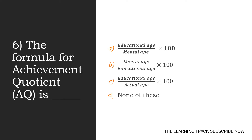The formula for achievement quotient is dash. The options are: educational age by mental age into 100, mental age by educational age into 100, educational age by actual age into 100, none of these. Option A — educational age by mental age into 100 — is the correct formula for achievement quotient.